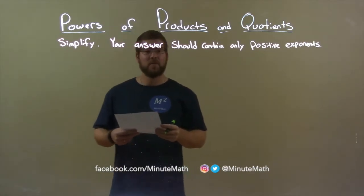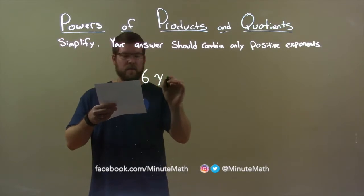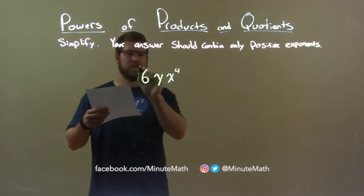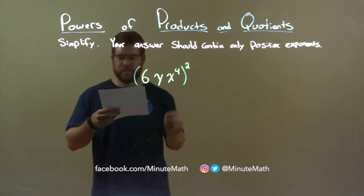So, if I was given this problem: 6yx to the 4th power, and all of that is raised to the 2nd power.